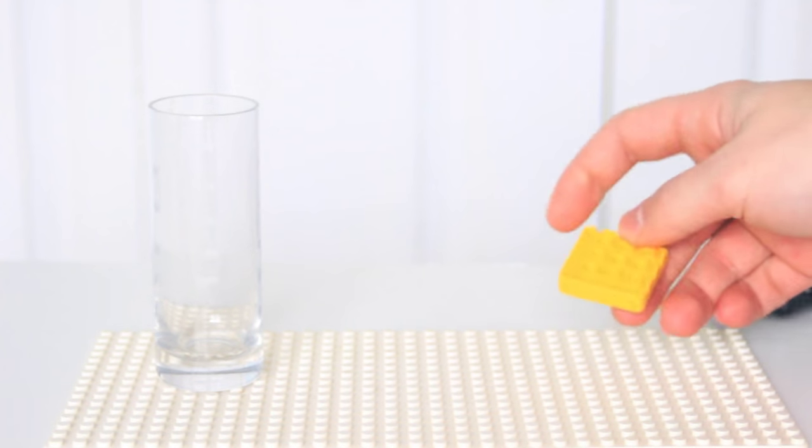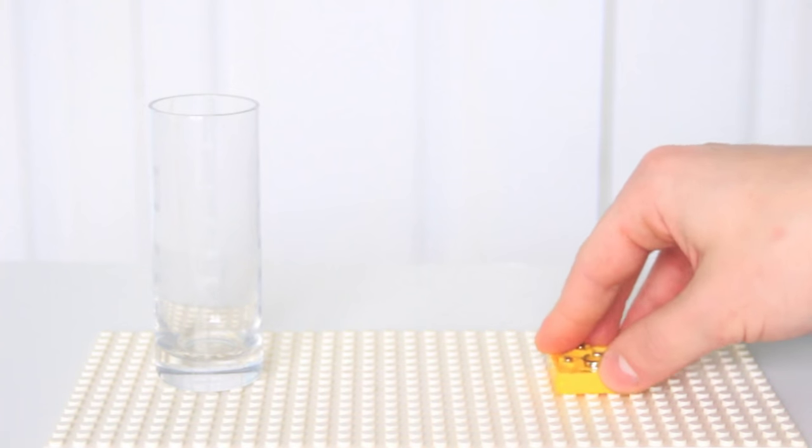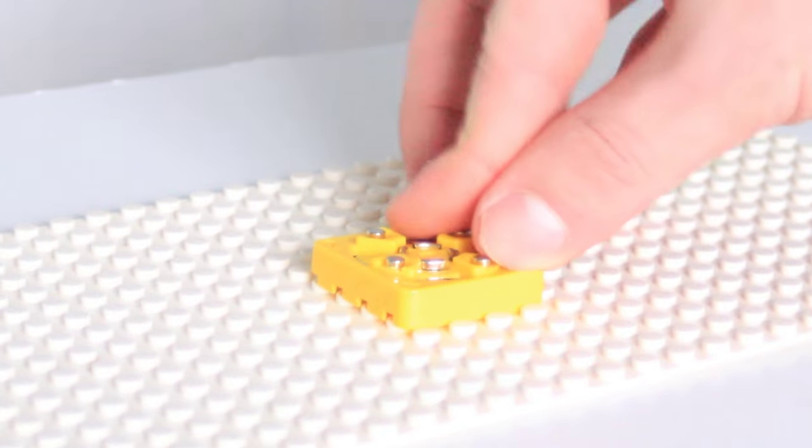So first of all, we have this Lego Compatible plate, which is normally a 4x4 Lego brick. We can just snap it onto a normal Lego piece, and it fits perfectly.